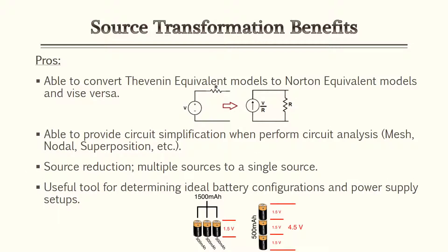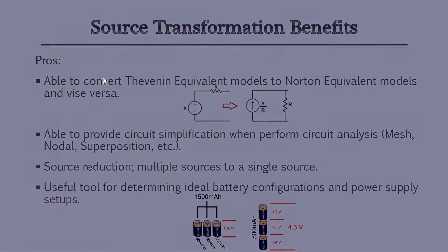So why are we going over source transformation? There are a lot of benefits. One, you're able to take a Thevenin equivalent model and convert it to a Norton equivalent model very quickly, so if you're strong with one technique you can easily convert to the other. Next, you're able to find circuit simplifications — any time you have different current sources and voltage sources on different branches, you may be able to reduce them down to all current sources or all voltage sources for mesh analysis or nodal analysis. Also, you can do source reduction: take multiple current sources or multiple voltage sources and narrow them down to a single source and a single internal resistance. Finally, it's a useful tool for determining ideal battery and power supply configurations.